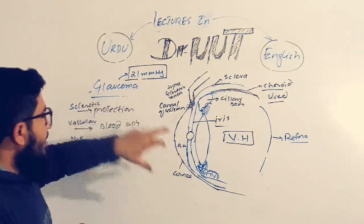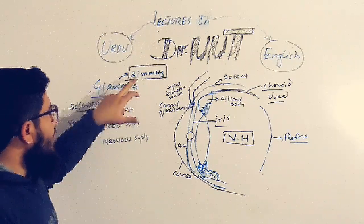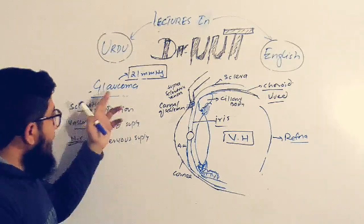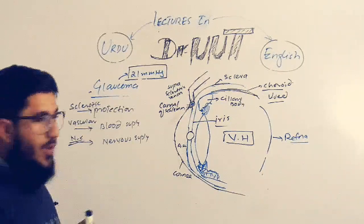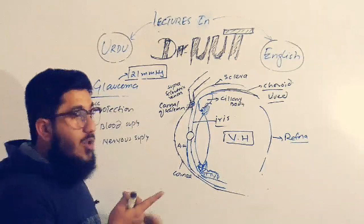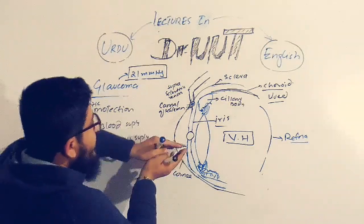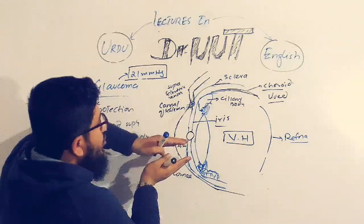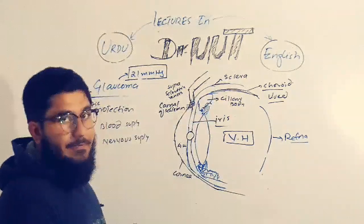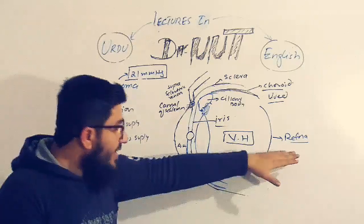The normal pressure provided by the aqueous humor is 21 mmHg. If this pressure increases beyond 21 mmHg, the disease that occurs is called glaucoma. The aqueous humor generates this pressure, and when the pressure increases, it is subjected to all layers of the eye, damaging the very sensitive retina.